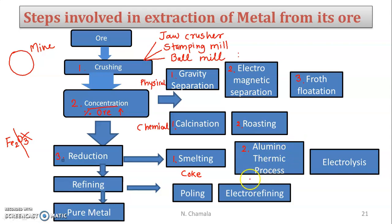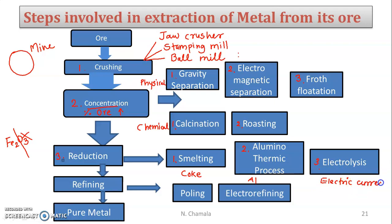One method of reduction is the aluminothermic process, also called thermite welding — used for joining railway tracks, where aluminium powder is used as the reducing agent. The third method is electrolysis, which we already studied in the first semester. During electrolysis, electric current is used to bring about the reduction.